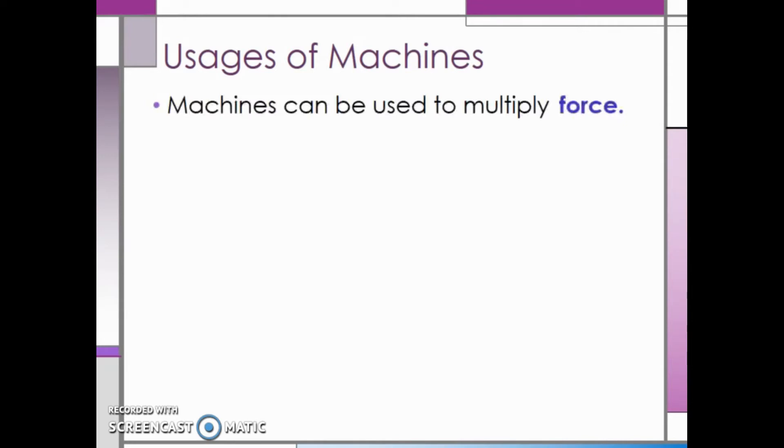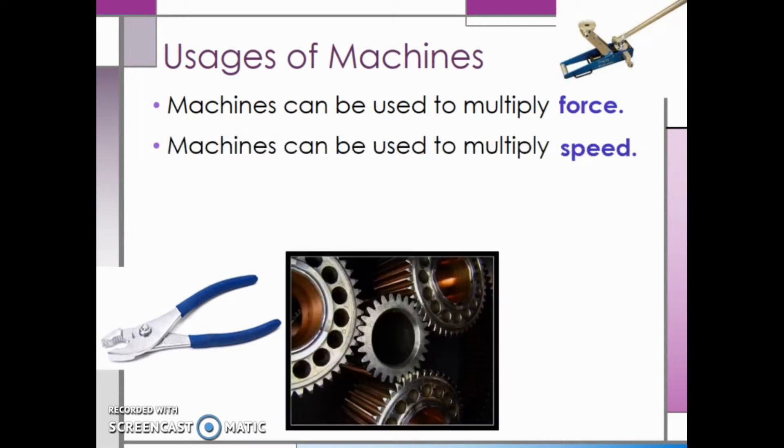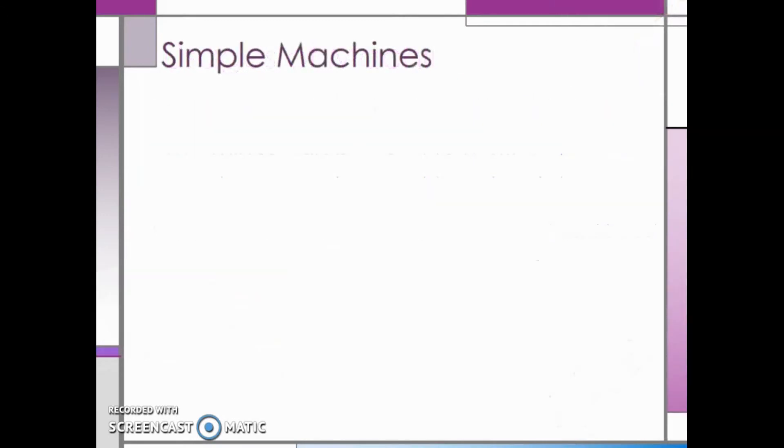They can be used to multiply force, like with pliers or a jack. They can be used to multiply speed, like with gears in a gear train. They can be used to extend distance, like pulleys on shafts. Machines can also be used to change direction, just like pulleys on a shaft.